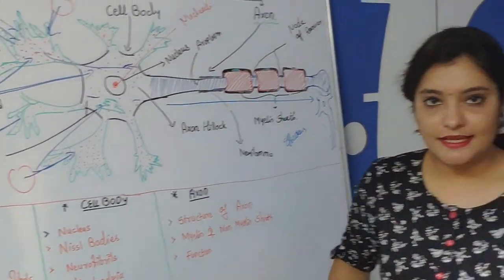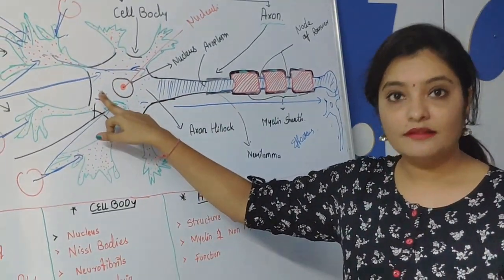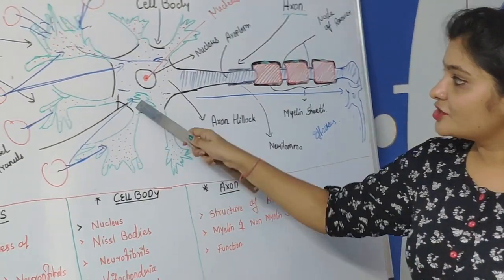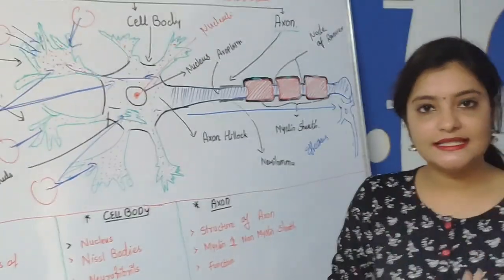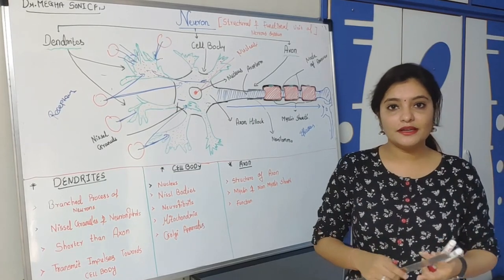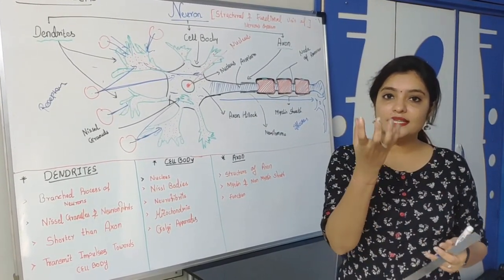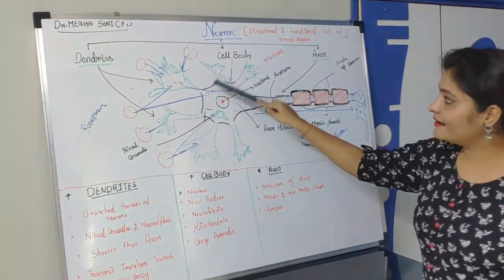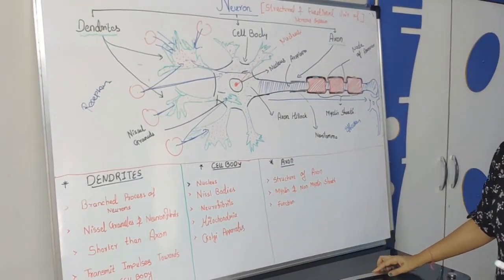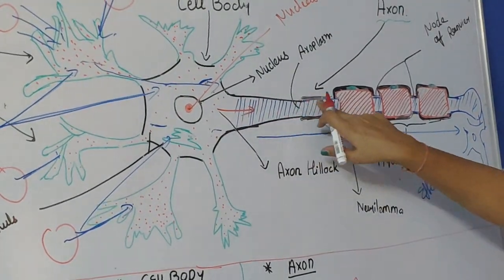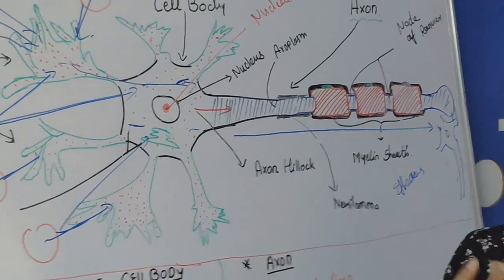The second organelle is Nissl body. The Nissl bodies are situated in the cell body and in the dendrites, but Nissl bodies are not situated in the axon. This cortex structure is the Nissl body. The Nissl body mainly consists of ribosomes. Ribosomes are responsible for synthesis of protein, and that protein is actually important for the survival of the cell. Since the Nissl body is only in the dendrites and cell body and not in the axon, through axonal flow this synthesized protein will be transmitted from the cell body to the axon. By this way the axon also gets protein from the dendrites and the cell body.